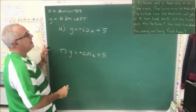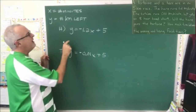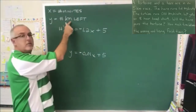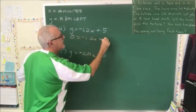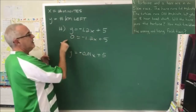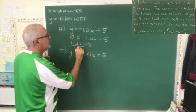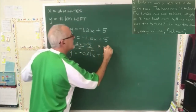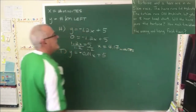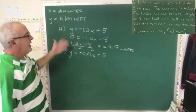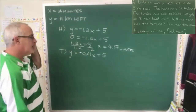Here are my equations. I'm going to plug a value into the hare's equation: when the number of kilometers left is 0, how many minutes have gone by? Moving the negative 1.2x across the equals, I have 1.2x equals 5. I'm going to divide both sides by 1.2, and I'm getting x equals 4.17 minutes. So the hare needs 4.17 minutes to finish the race, to have 0 kilometers left.